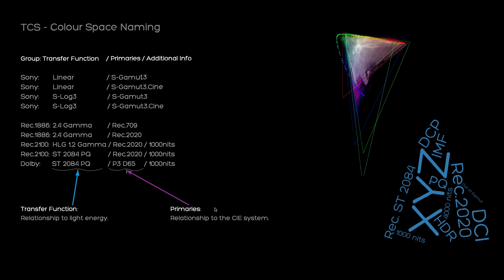Let's talk about naming in TrueLight Color Spaces — a very important foundation that can also help with troubleshooting. All color spaces we create and distribute follow the same naming scheme. It starts with the group followed by a colon; the group can be a camera manufacturer or the dominant SMPTE or ITU standard. After the group, we have the transfer function — the relationship of signal values to light energy — then a forward slash and the primaries, which are the relationship of signal values to the CIE system.